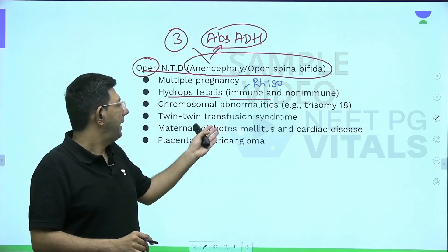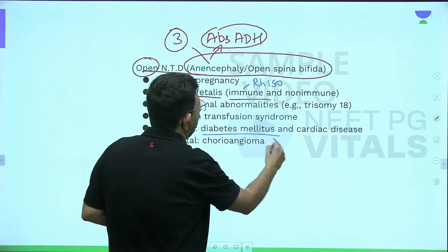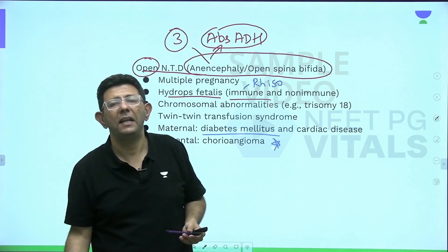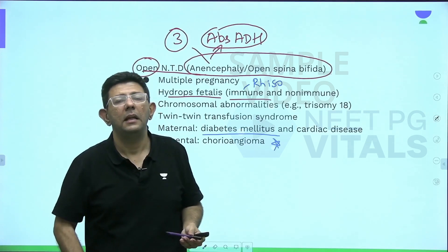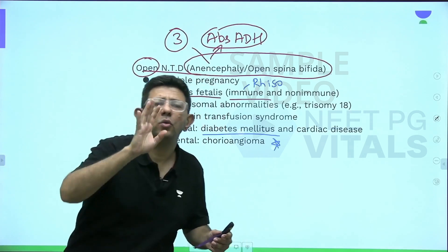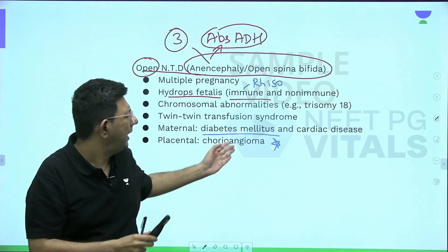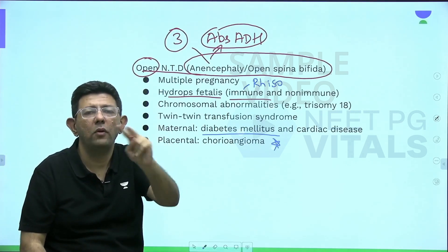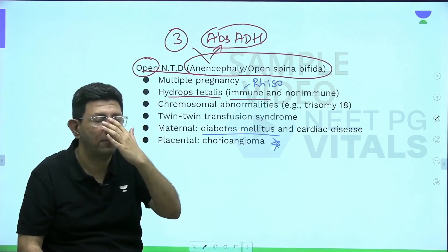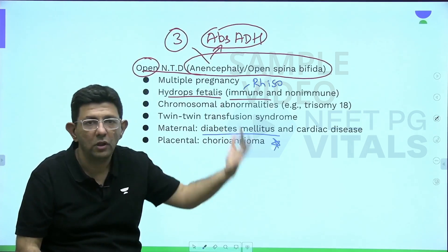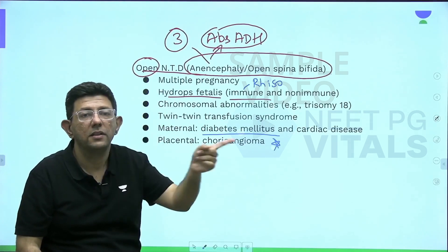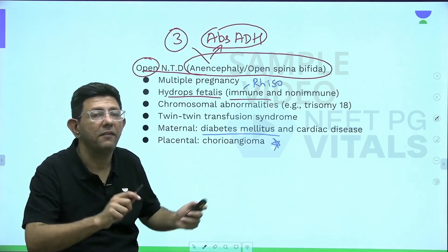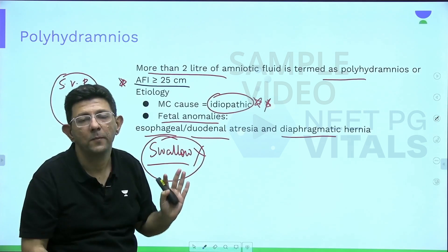Maternal diabetes is very important. Choriangioma is a rare placental tumor. Practically, day-to-day when I see excess fluid around the baby, I check two simple things first: are the mother's sugar levels normal — she could have gestational or overt diabetes — and does the baby have any structural anomaly? Rule out anomalies and check maternal blood sugar.